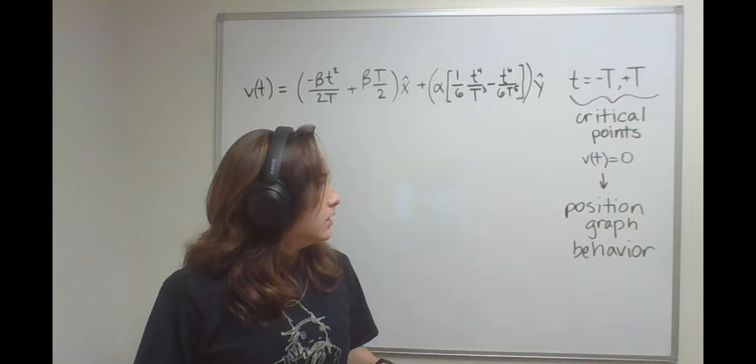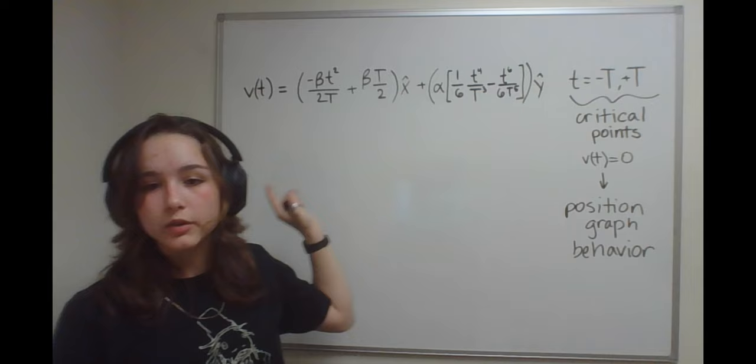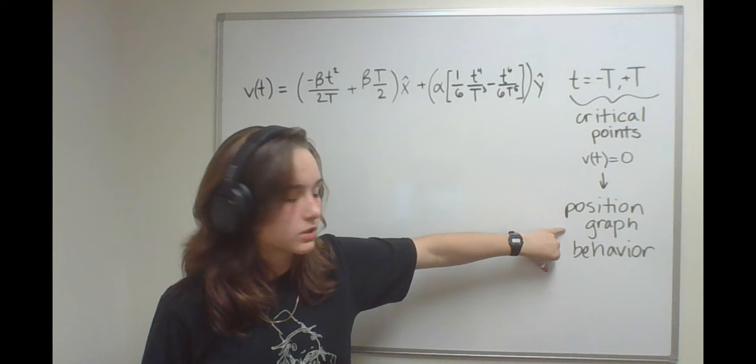Critical points are when this derivative of position equals zero, which indicates the position graph behavior. So that's the velocity.